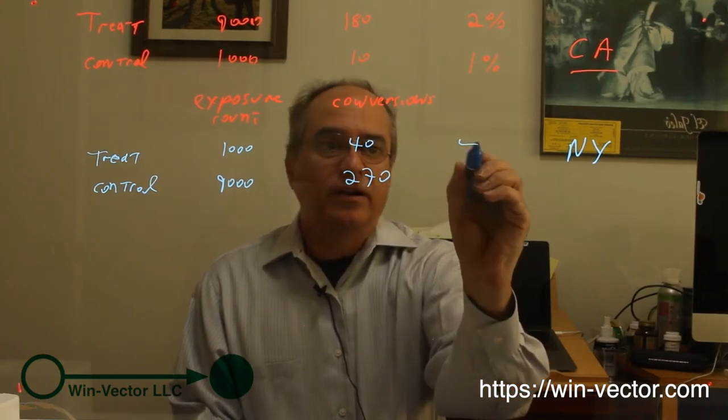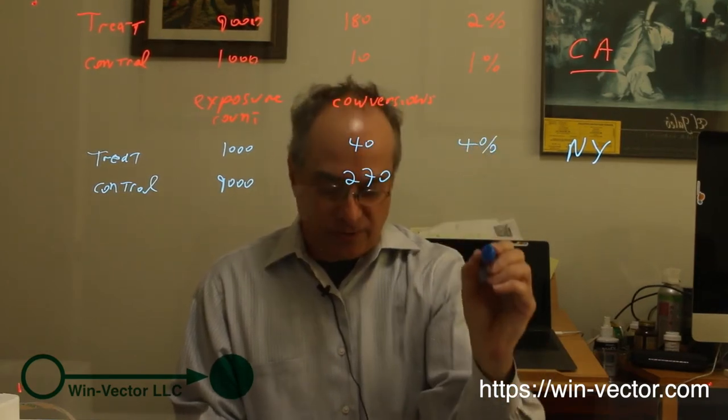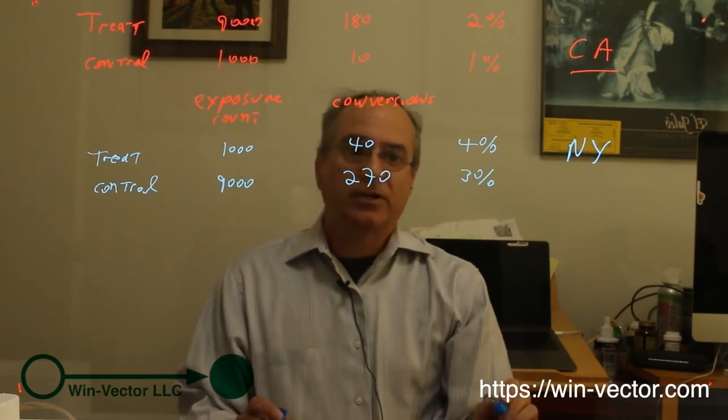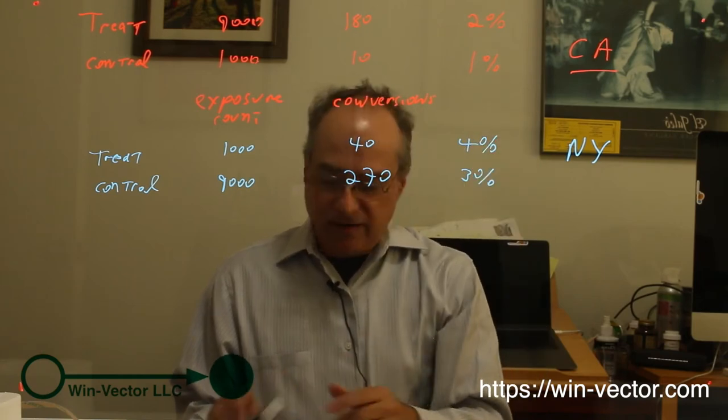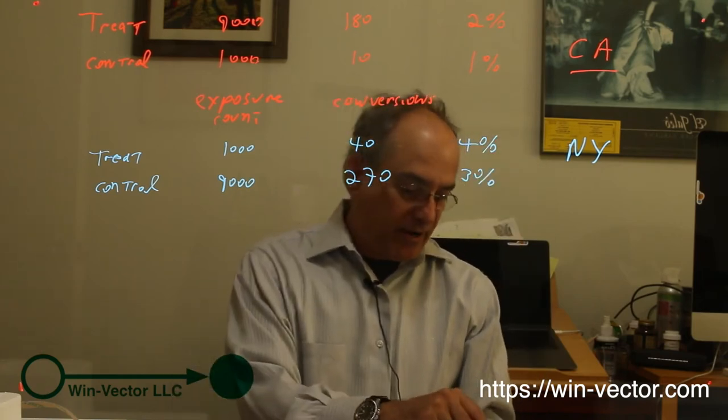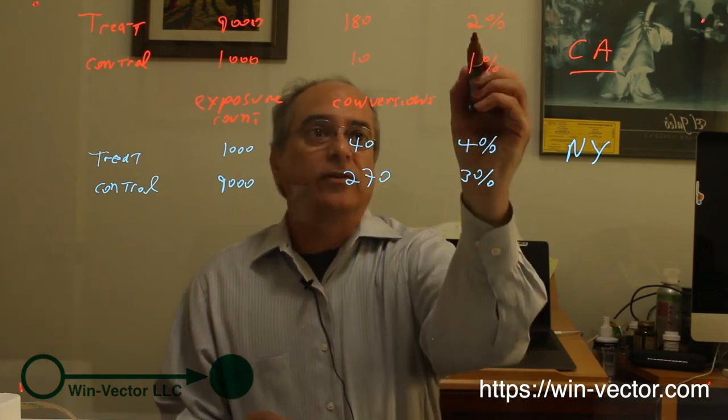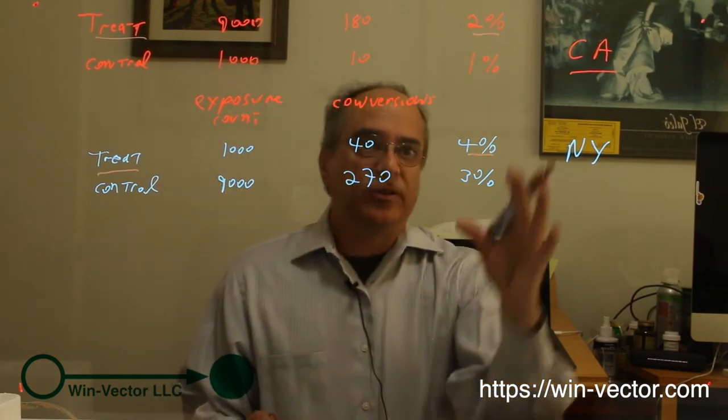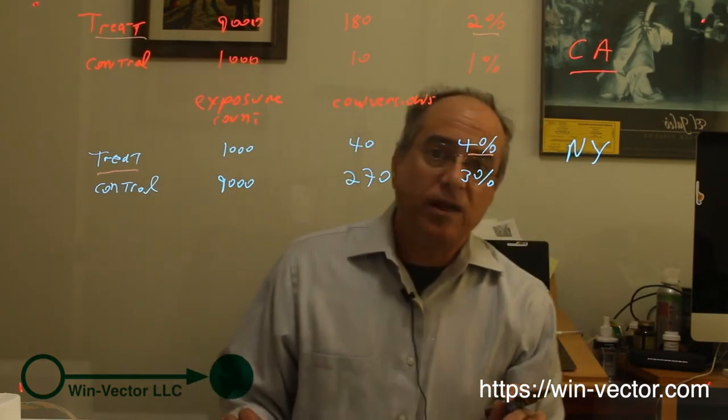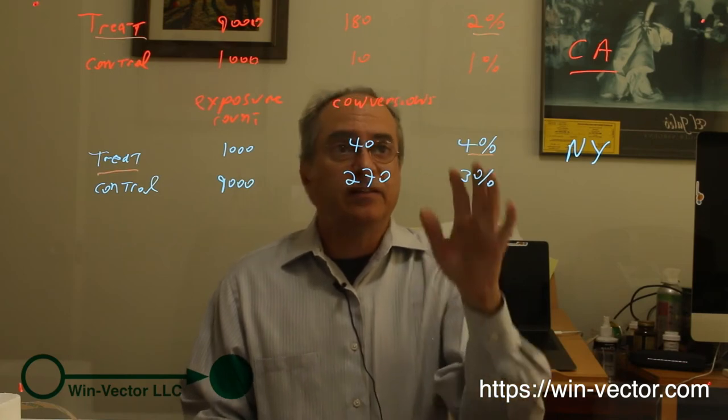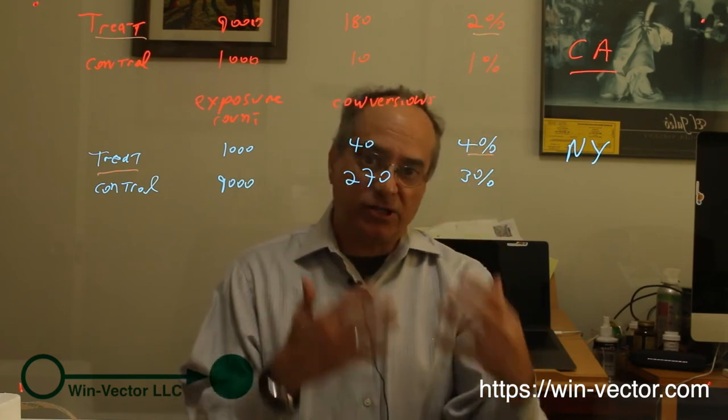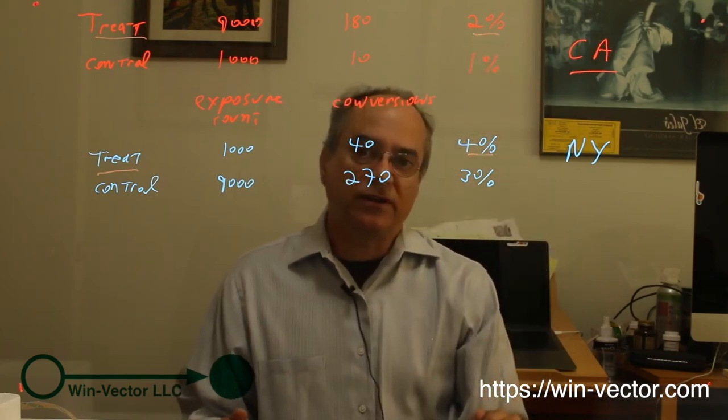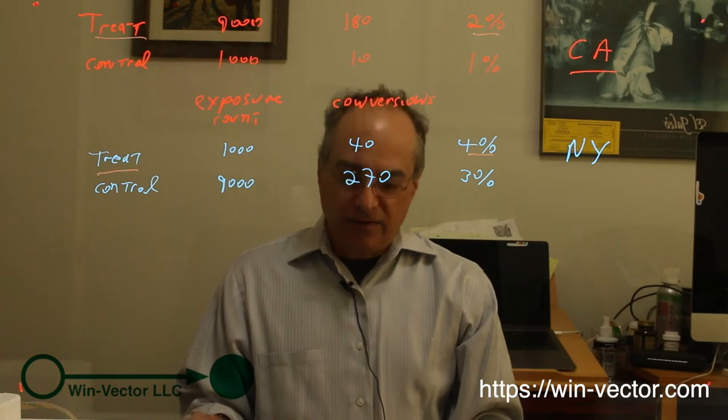When they run this experiment, they see the following number of conversions. They see a 4% conversion rate in the treatment group and a 3% conversion rate in the control group. The important thing to abstract is, in both cases, treatment dominates control. We're clearly dealing with different populations, but we are seeing the same effect, that the treatment or change is an improvement over control. So even though the populations are working differently, we're seeing the experiment confirmed.